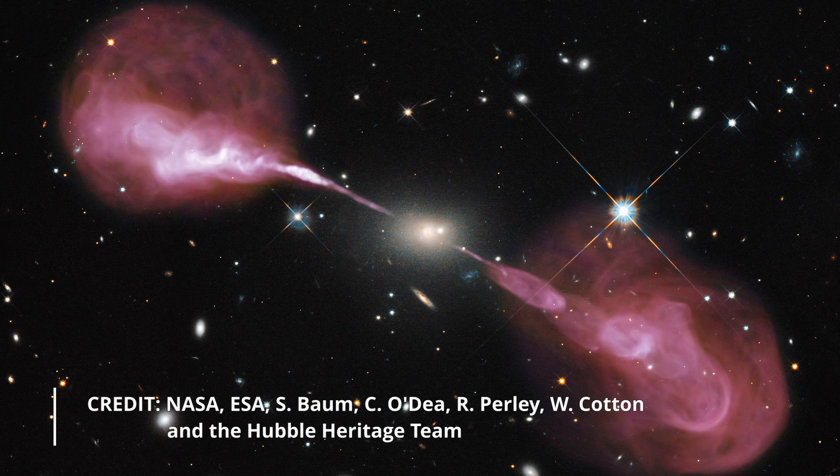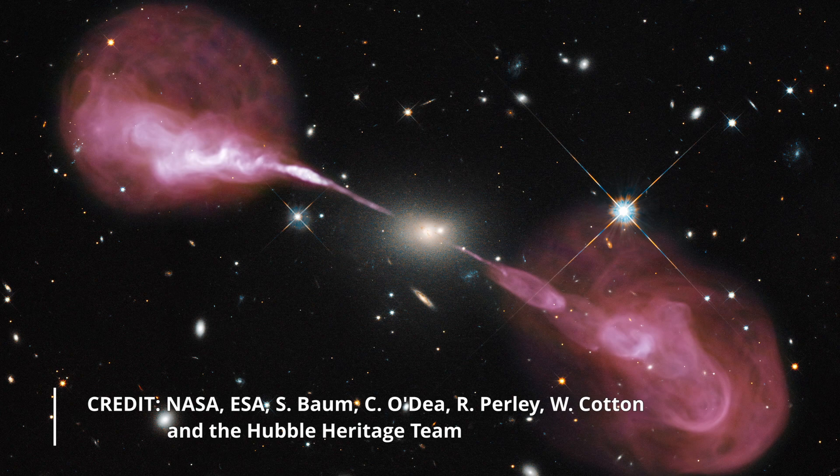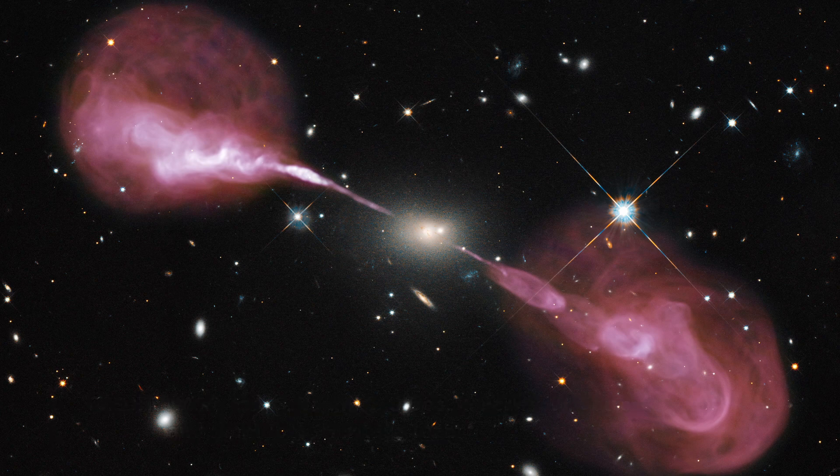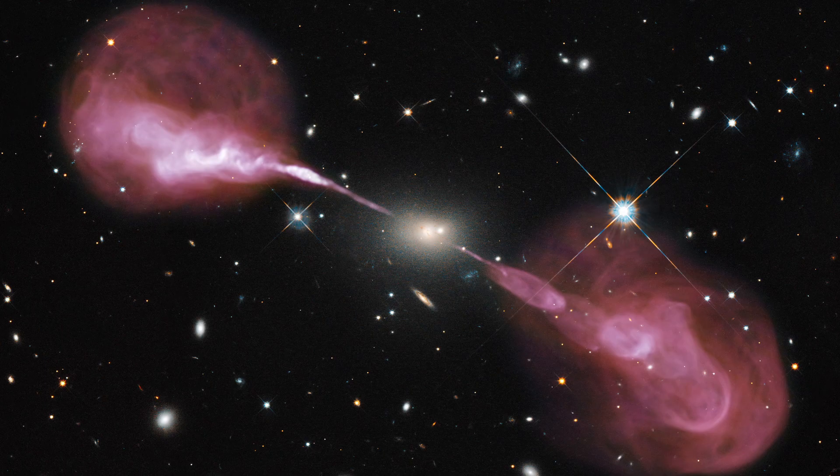Radio galaxies are one of these types where an active galaxy ejects material from jets which is thought to form into lobes much further out.